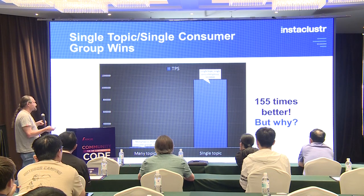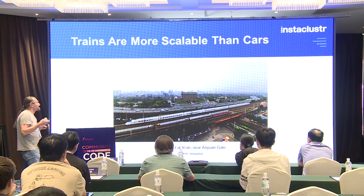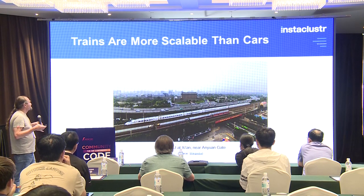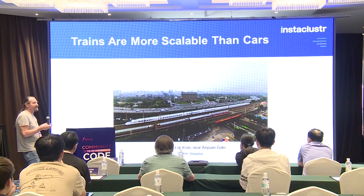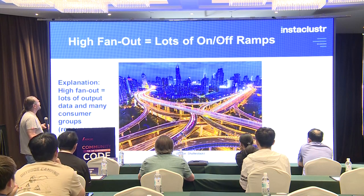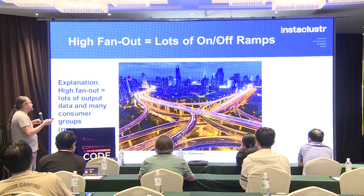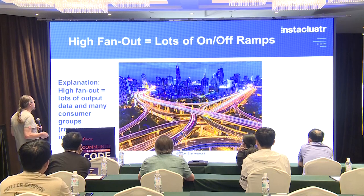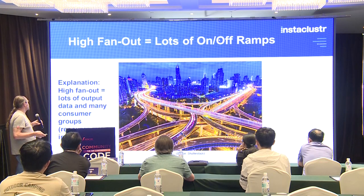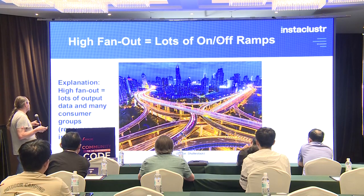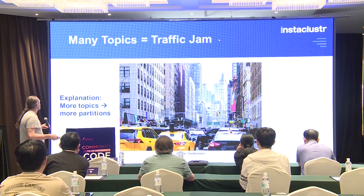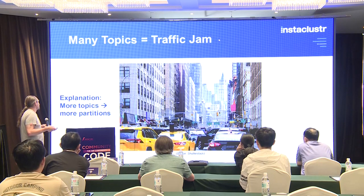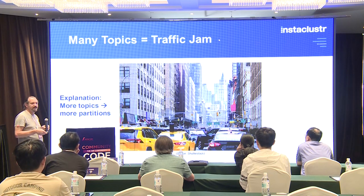It's quite a big difference — but why? Going back to my transportation metaphor, things like trains are a lot more scalable than cars: you can put a lot more people onto a single train. There's also the problem of high fan-out — a complex road system with lots of on and off ramps. High fan-out means lots of output data coming out of the cluster and many consumer groups, which are fairly resource-intensive on the Kafka cluster. Having many topics is a bit like a New York traffic jam — the more topics you have, the more partitions you need, which has significant overhead.